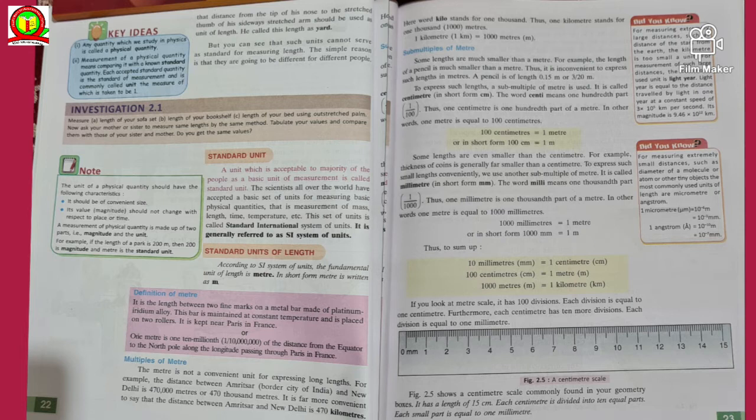Okay, so there is a blue box which says any quantity which we study in physics is called a physical quantity. Measurement of physical quantity means comparing it with a known standard quantity. Each accepted standard quantity is the standard of measurement and is commonly called unit. The measure of which is taken to be one. So keep this in mind that unit means one. Unit quantity means one.